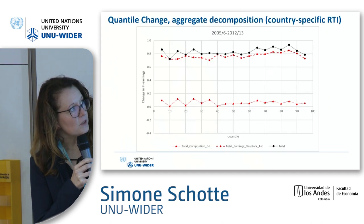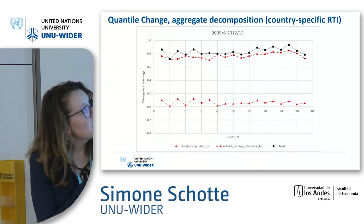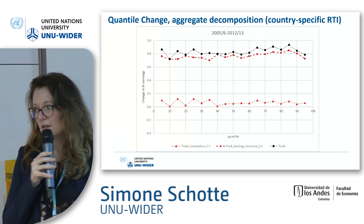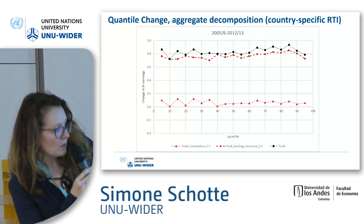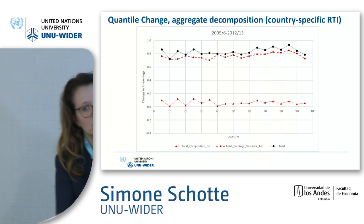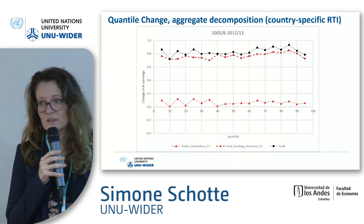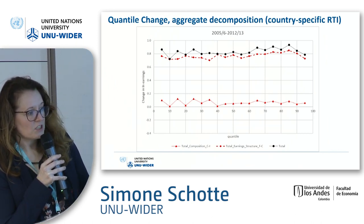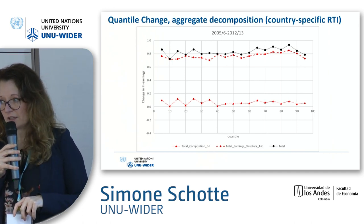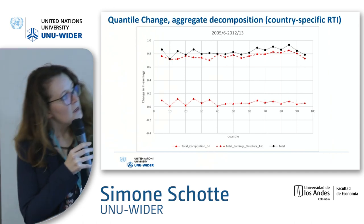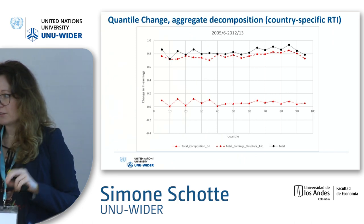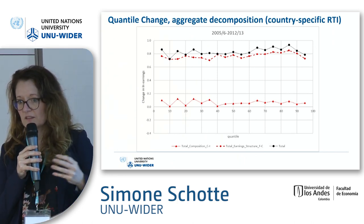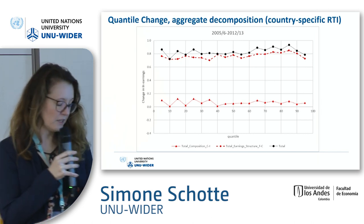We now move to the decomposition. The black line here is the same growth incidence curve shown earlier, and we decompose it into a composition effect and an earnings structure effect. What we can see is that the main explanatory factor for the growth incidence is what happened to earnings — the earnings structure is driving most of the inequality pattern.